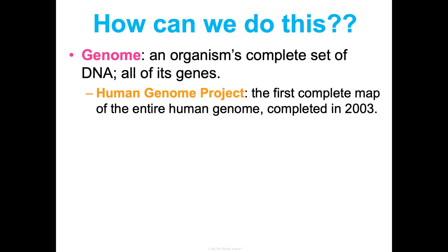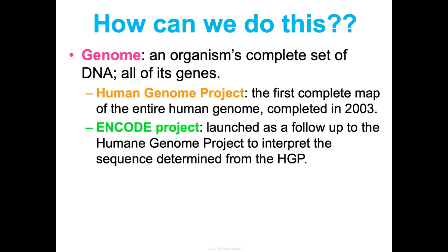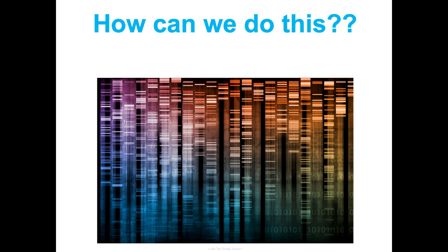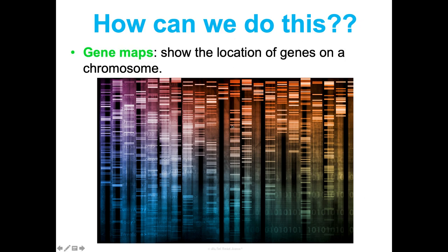There are also other projects used to map the human genome. The ENCODE Project was launched as a follow-up to the Human Genome Project and was used to interpret the sequence determined from it. There's also the 1,000 Genomes Project, which was a more detailed genome map sequencing over 1,000 different people from a variety of ethnic backgrounds, completed in 2015. Gene maps show the location of genes on chromosomes, and we can't manipulate our genes if we don't know where they are, so these maps are critical.